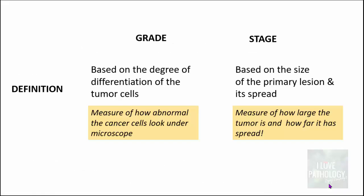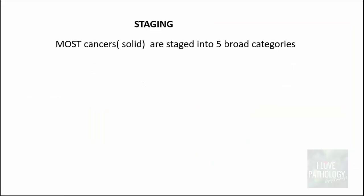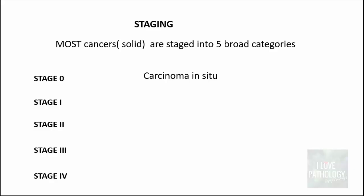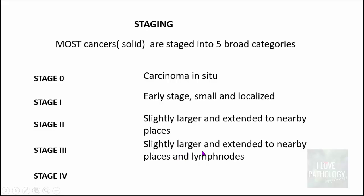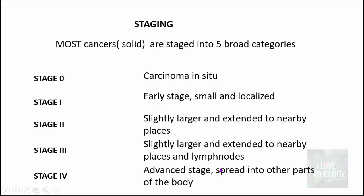Staging is based on the size of the primary lesion and its spread — a measure of how large the tumor is and how far it has spread. Most solid tumors are staged into five broad categories: Stage 0 (non-invasive, carcinoma in situ), Stage 1 (small and localized), Stage 2 (slightly larger, extended to nearby places), Stage 3 (much larger, extended to nearby places and lymph nodes), and Stage 4 (advanced stage where the tumor has spread into other parts of the body).